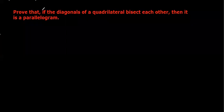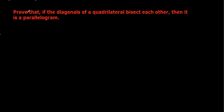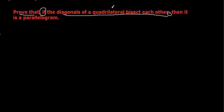In this particular question, the word 'if' is very important. There is a 'prove that' followed by a comma. Prove that: if the diagonals of a quadrilateral bisect each other — this information is given — then it is a parallelogram.